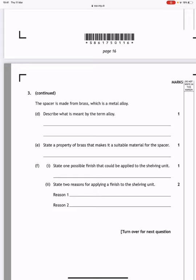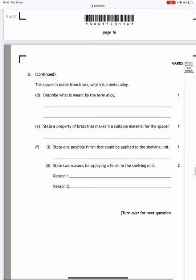State one possible finish that could be applied to the shelving unit. Well, you could spray paint it. You could paint it. You could lacquer it. You could plastic dip coat it. You could blue it. You can blue steel. State two reasons for applying a finish to the shelving unit. Well, it makes it look good and it protects it, stops it from rusting.